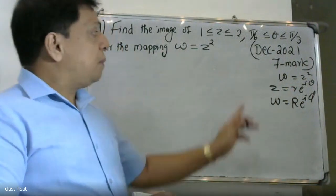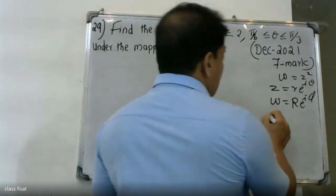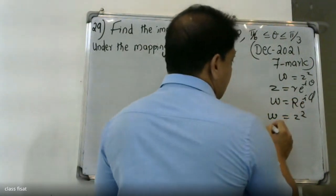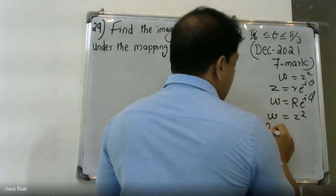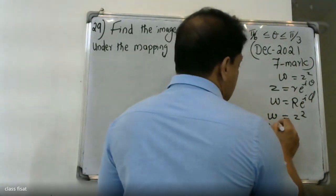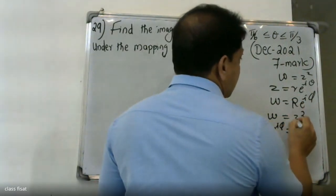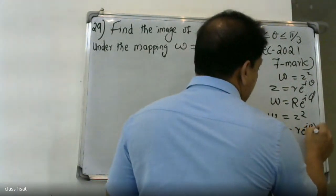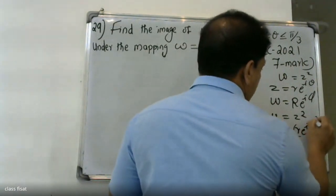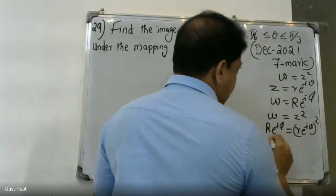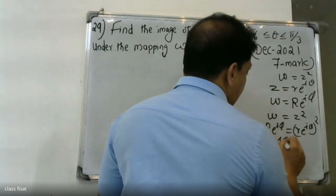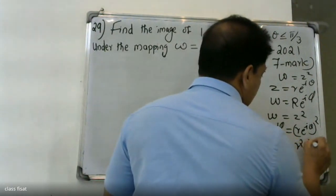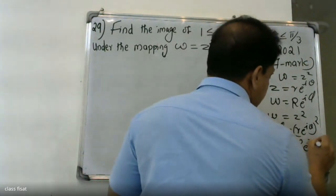The equation is w = z². Write w = R·e^(iφ) and z = r·e^(iθ). Substituting, we get R·e^(iφ) = r²·e^(i2θ).